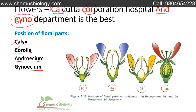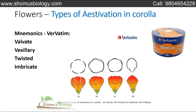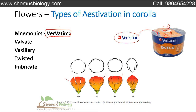The types of aestivation found in the corolla are remembered using the mnemonic 'Verbatim' — Verbatim being a DVD and CD company. V for valvate, then vexillary, T for twisted, and I for imbricate — those are the four different types of aestivation in corolla. Twisted means slightly twisted together; imbricate, vexillary, and valvate each have their distinct arrangement.